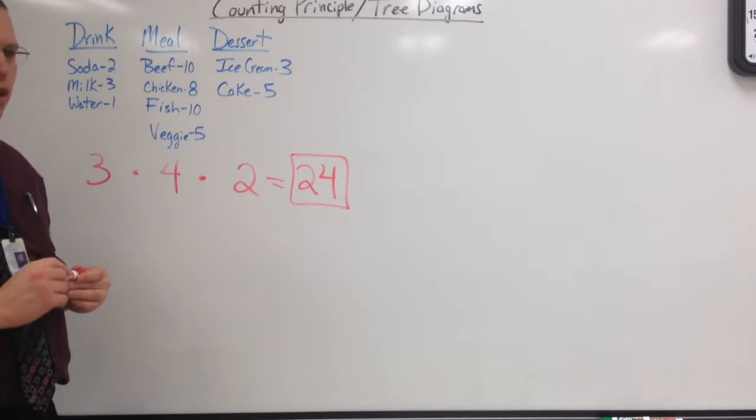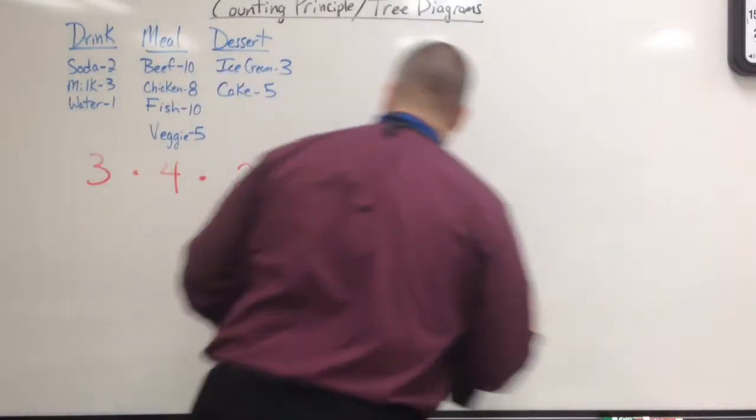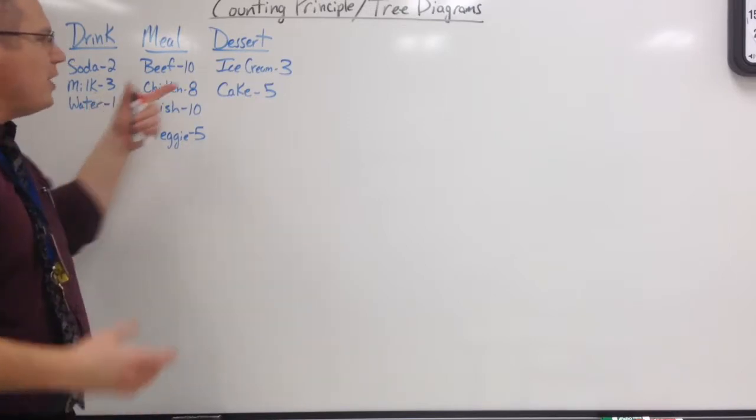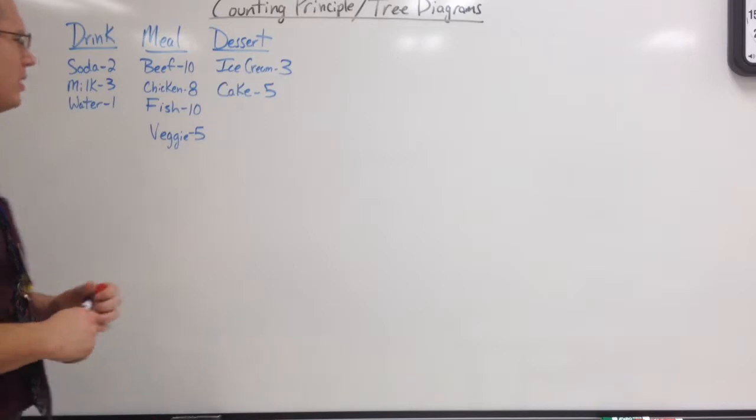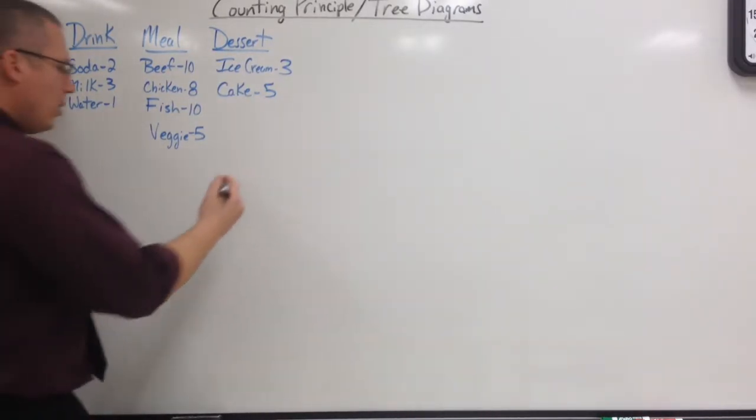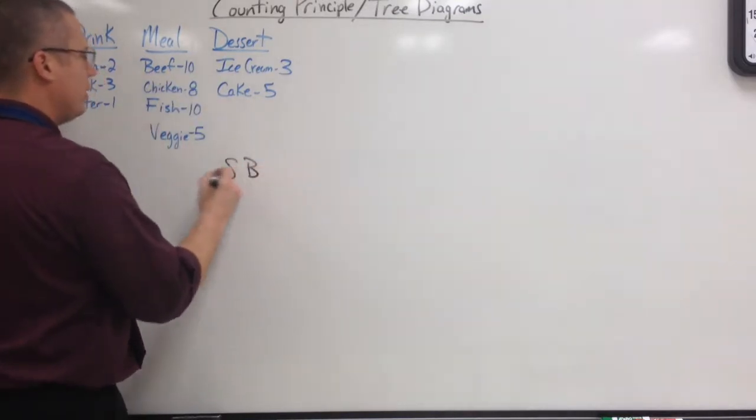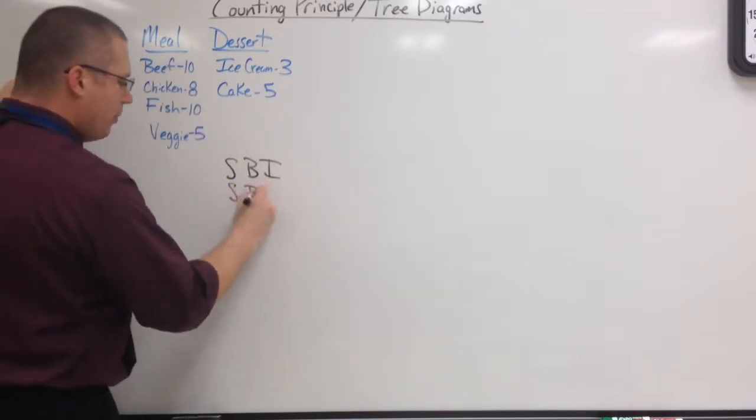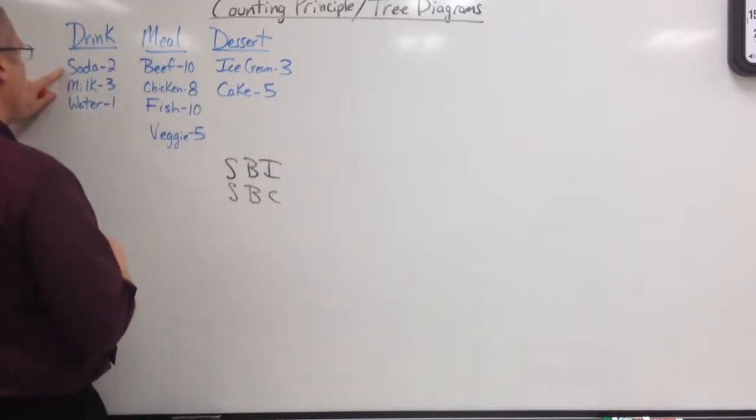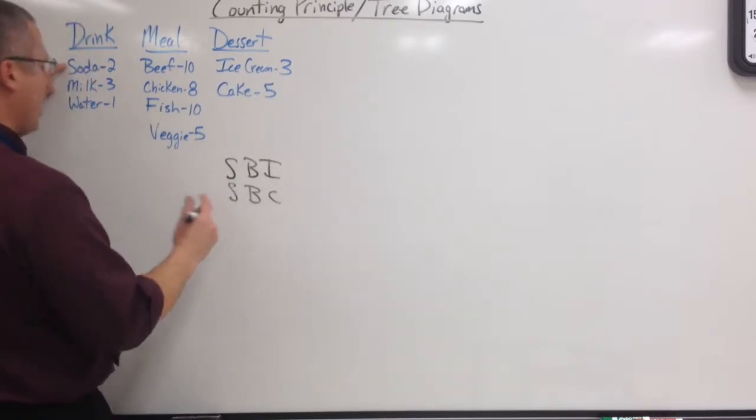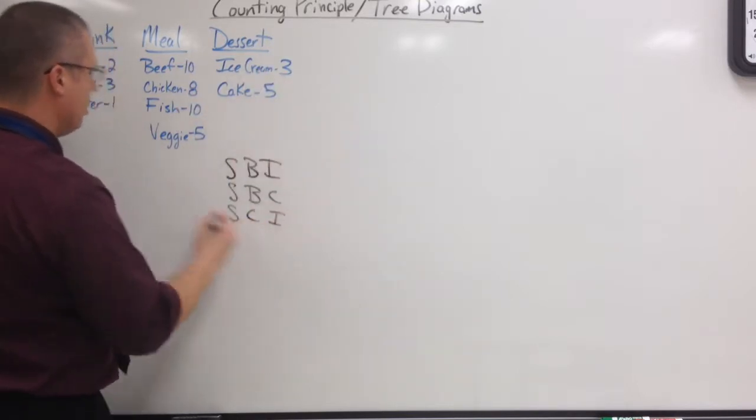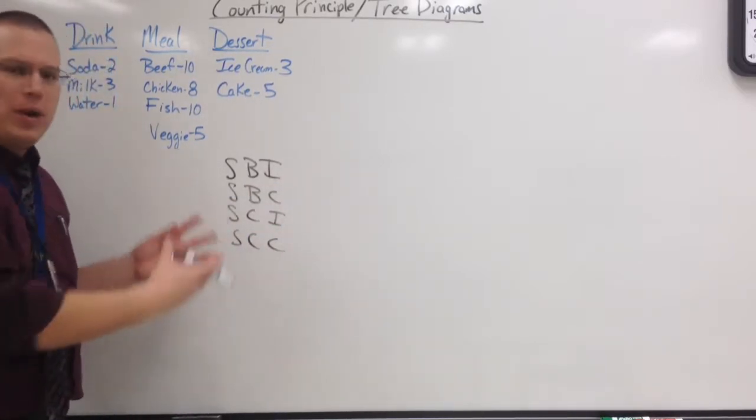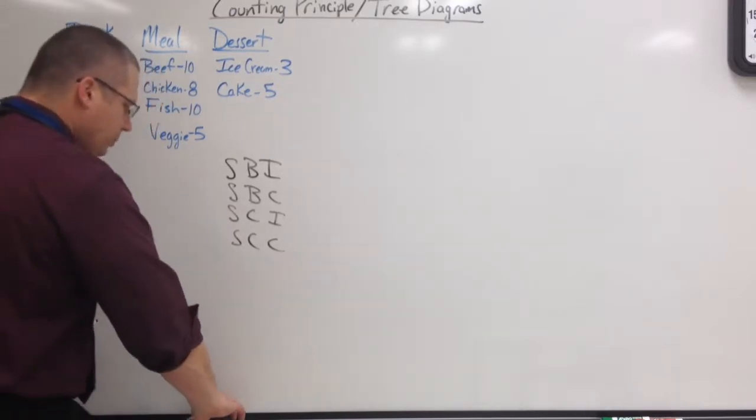Now, beyond that, there are times where you actually want to see what your possibilities are. For instance, how many of those 24 gives you fish and ice cream? Well, there's a couple ways to do this. One, you could simply start listing out. I could have a soda, beef, ice cream. I just went straight across. Next up, I could have soda, beef, but I could pick the other dessert, cake. And notice what's happening. I'm listing it. It's going in order, but this is going to take a little bit to get all 24.